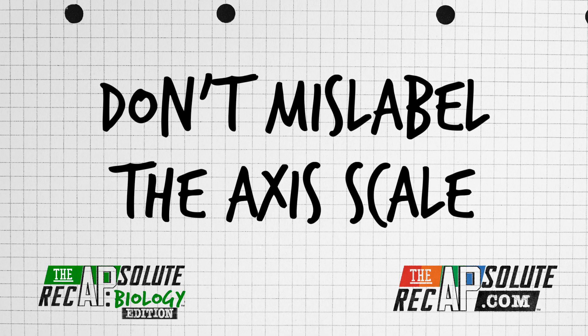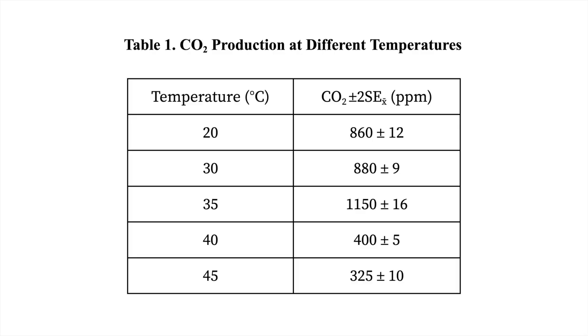Number two: don't mislabel the axis scale. You need to pay careful attention to the data tables given, because the College Board loves to have intermittent scaling. Don't fall into the trap and space out your data points evenly on the X or Y axis just because it looks nice and symmetrical. Not only will you miss out on a graphing point, but this can also cause you to misinterpret rate calculations.